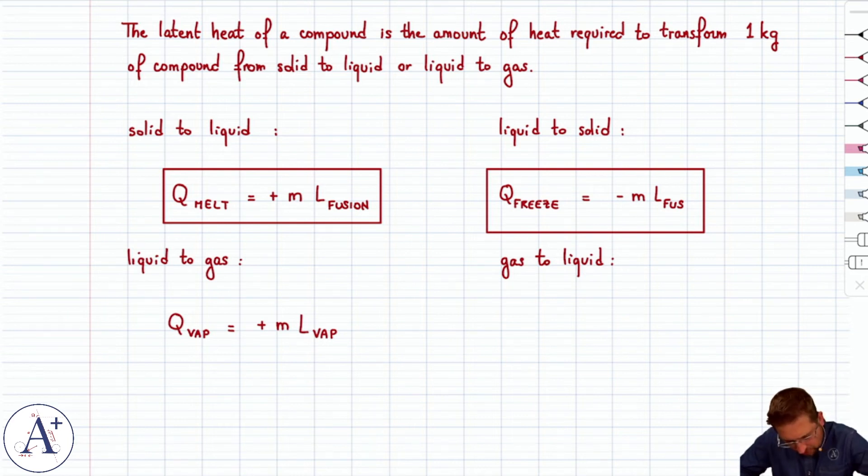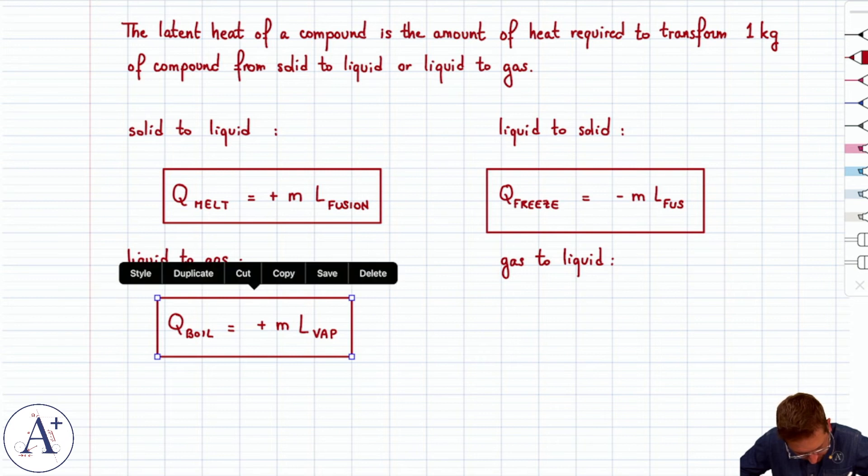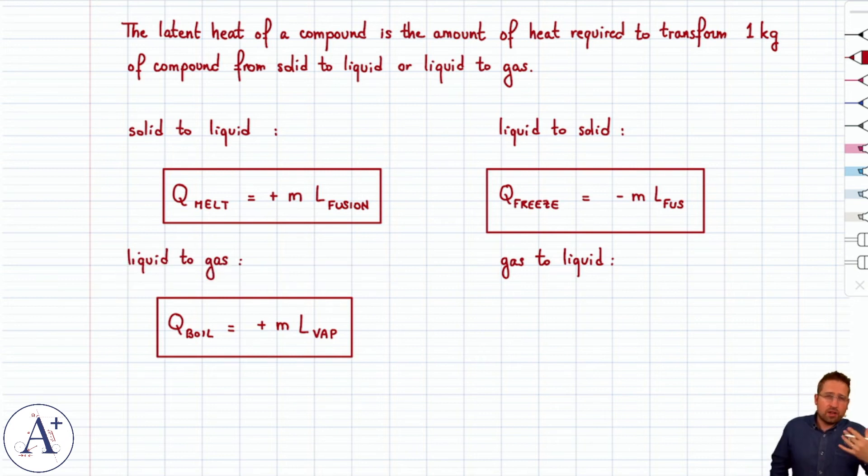m times the latent heat of vaporization. And so, actually, let's call this Q boil because that's what I called it in the notes. So if you boil off liquid water and create steam, so you go from liquid to gas phase. The amount of heat required to boil the water is mass times the latent heat of vaporization.